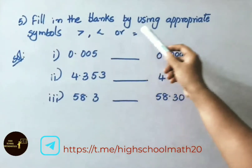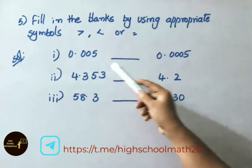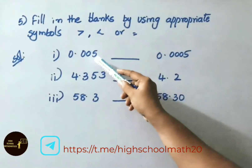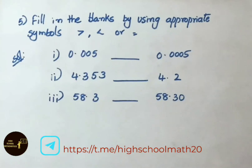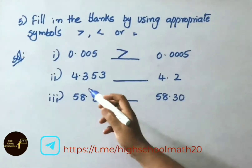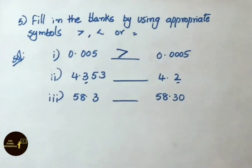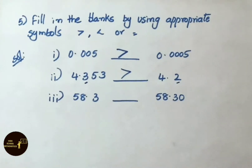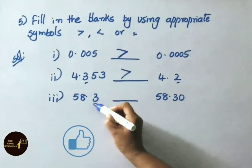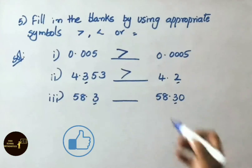See question 5: fill in the blanks using appropriate symbols — greater than, less than, or equal to. First: 0.005 vs 0.0005. There are five thousandths versus zero thousandths, so 0.005 is greater than 0.0005. Second: 4.353 vs 4.2. Three tenths is greater than two tenths, so 4.353 is greater than 4.2. Third: 58.3 vs 58.30. The tenths place is 3 in both — these are equivalent decimals, so put the equal to sign.